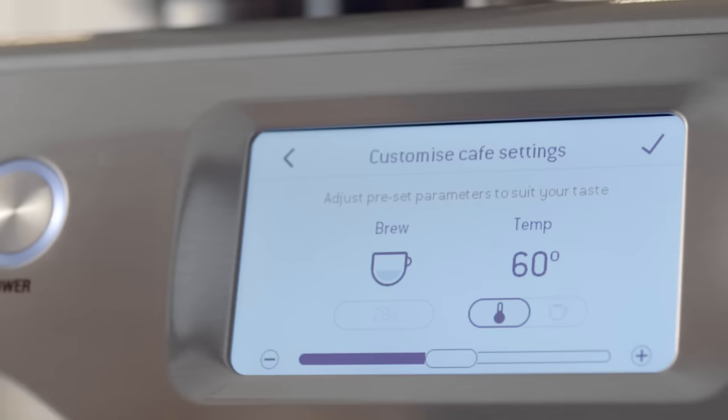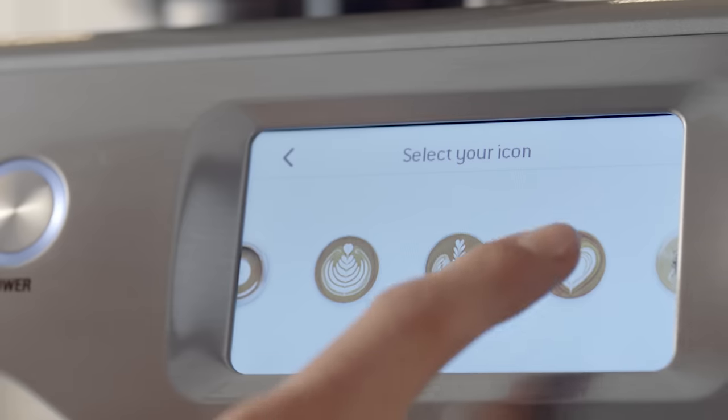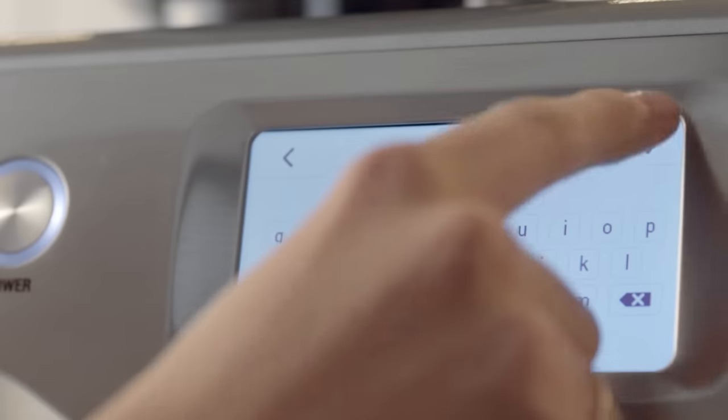It lets me customise the coffee so it's just the way I like it: stronger, weaker, hotter, cooler, frothier or not. Then it lets me choose my own icon, name it, and save it as a favourite.